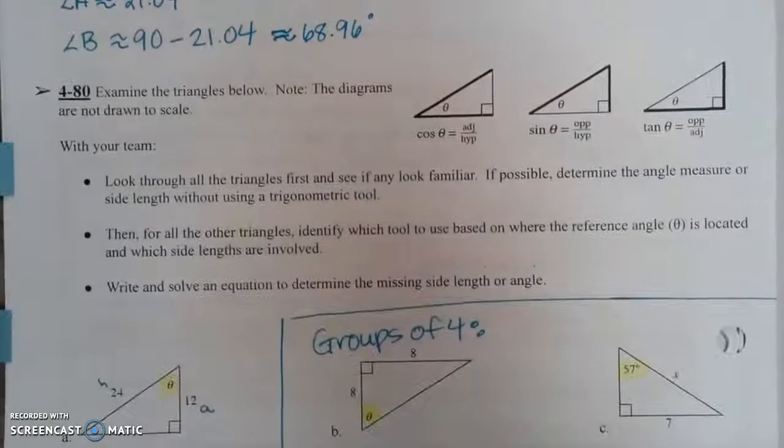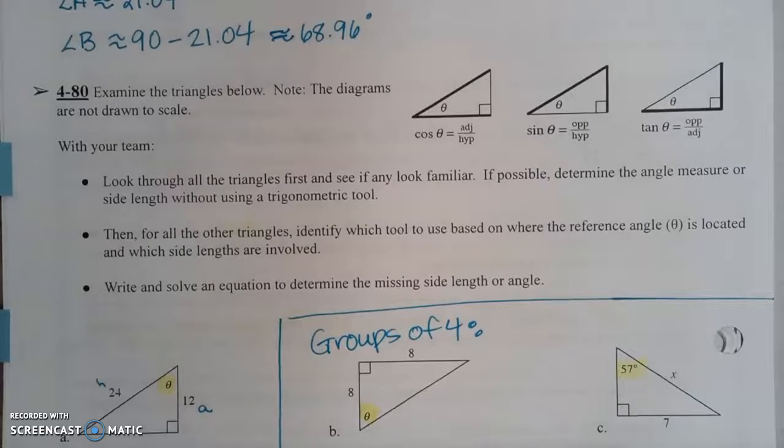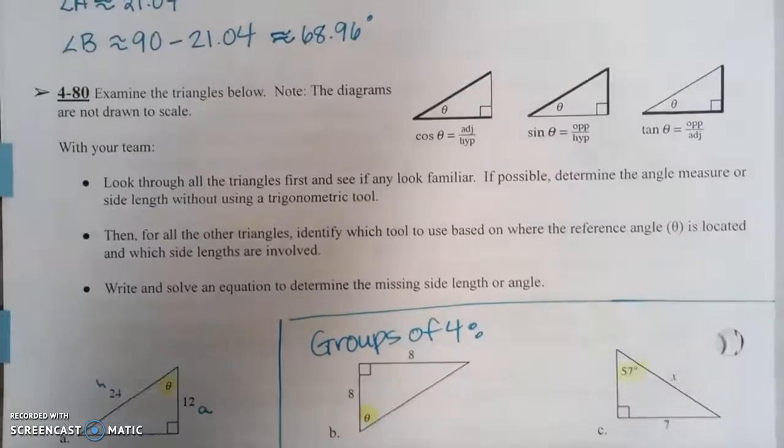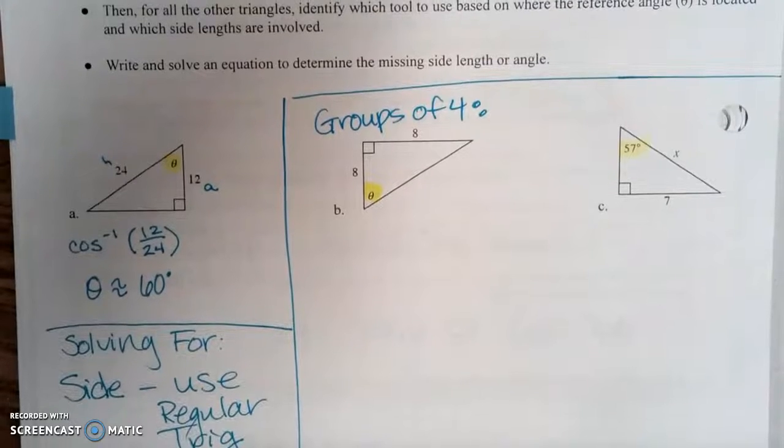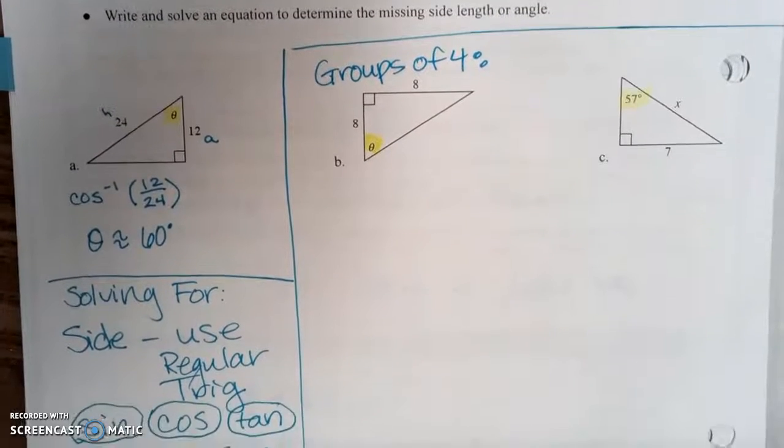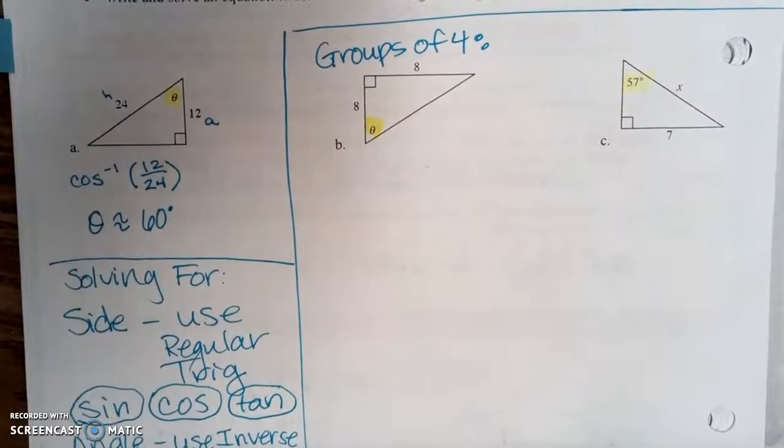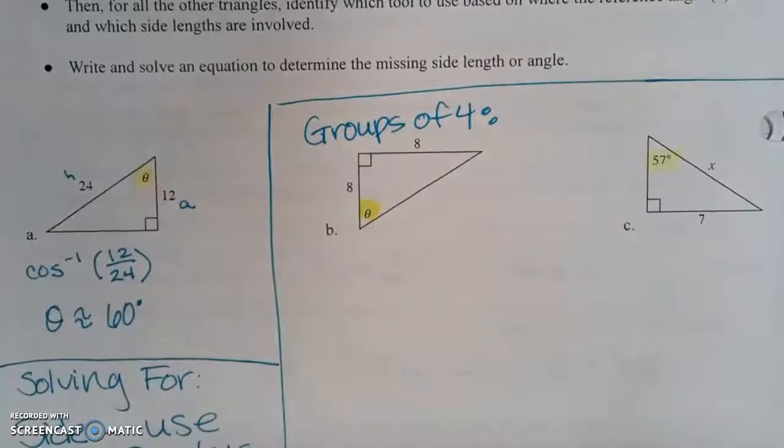Question 80. Examine the triangles below. Note that the diagrams are not drawn to scale. With your team, you're going to look through all the triangles first, and see if any look familiar. If possible, determine the angle measure or the side length using a trigonometric tool. Then for all other triangles, identify which tool you used. Write and solve the equation to determine the missing side length. I'm going to do A with you. And then in your groups of four, you're going to do B and C.